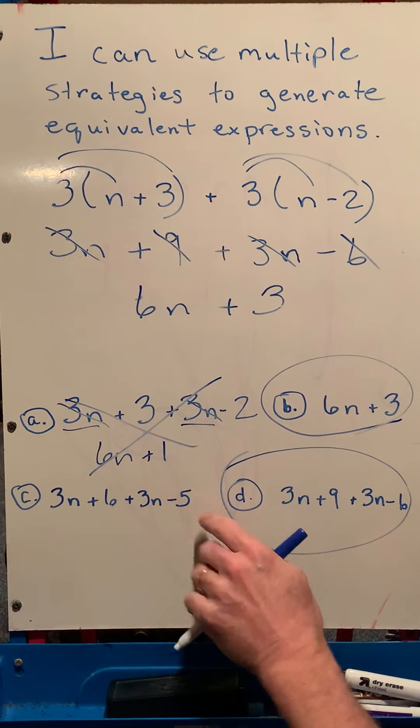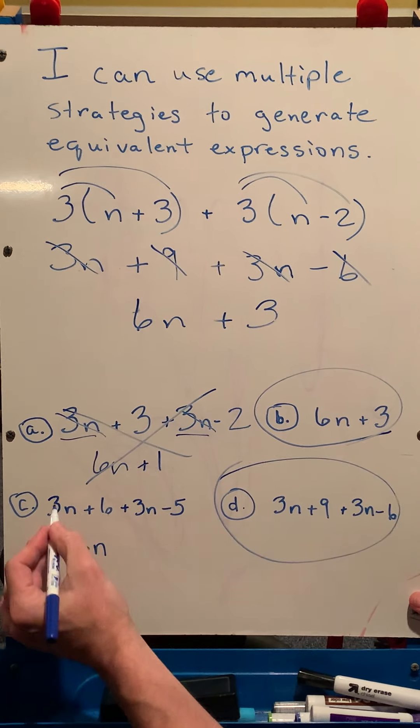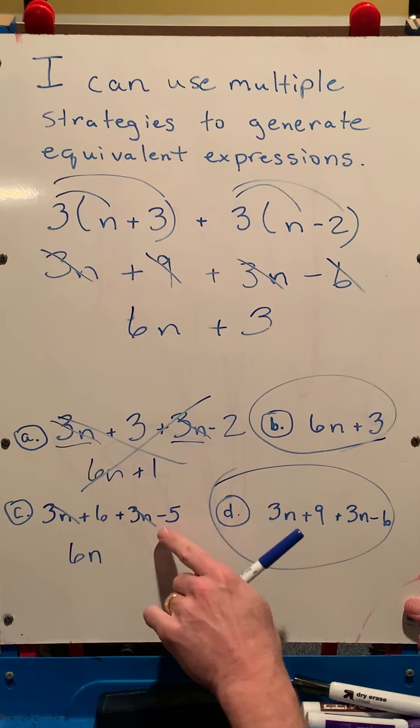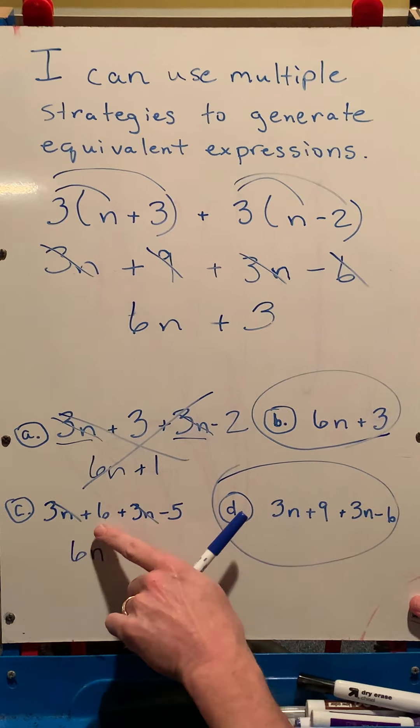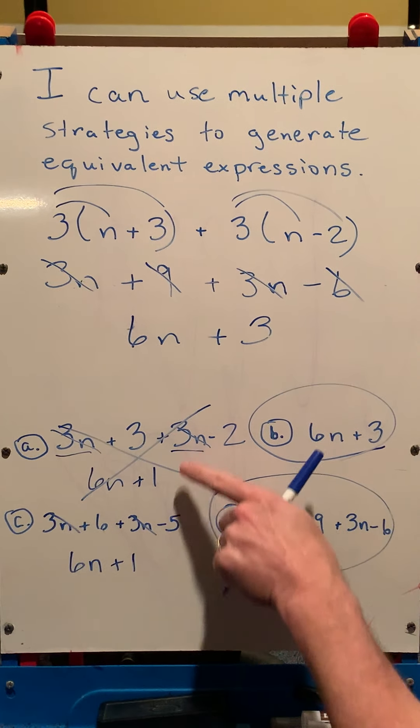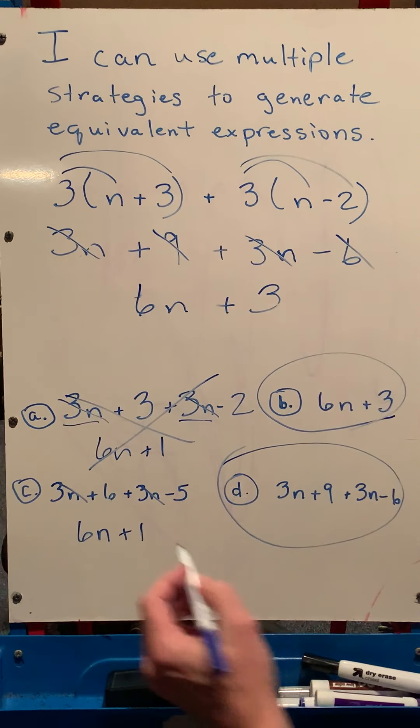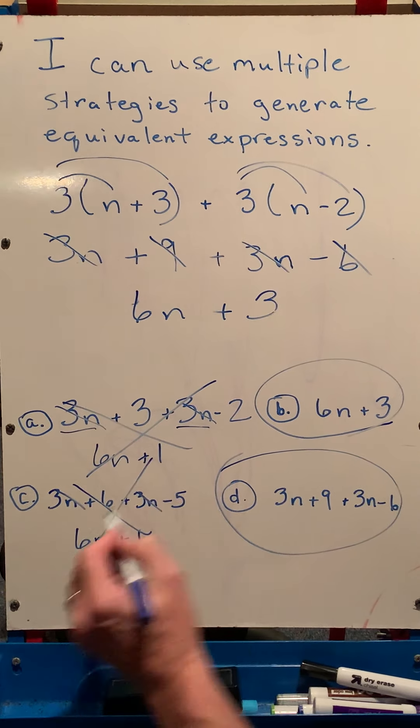And I would do the same thing down here. 3n and 3n, again, is still 6n. And then 6 minus 5, a positive 6 minus 5, is a positive 1. So actually, these two ended up being the same thing. They were equivalent. But unfortunately, they're not equivalent to this one. So I would cross that one out.